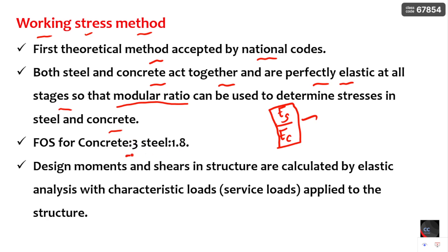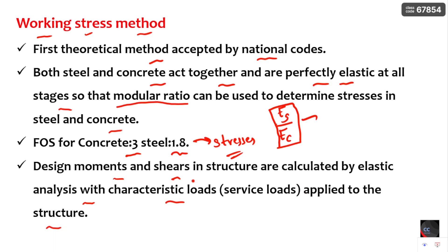The factor of safety for concrete is assumed as 3, and for steel it is 1.8 in the working stress method. Remember, this factor of safety is for stresses only — it is not applied for loads. Design moments and shears are calculated using characteristic loads applied to the structure, meaning actual loads without any load factor applied.